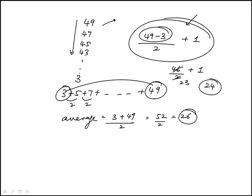So the sum of all these terms would be average times the number of terms. So it would be 26 times 24.